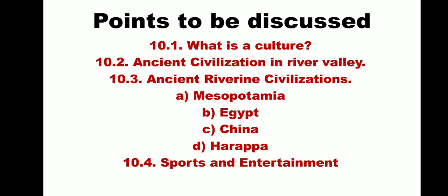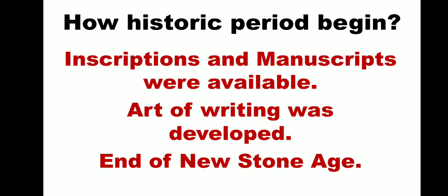Before that, let us know how the historic period began. In earlier chapters you have learned that written records were available in the form of inscriptions, manuscripts, books, etc. In ancient civilization, the art of writing was developed. Due to this, the ancient civilization's new stone age came to an end and the historic period began.